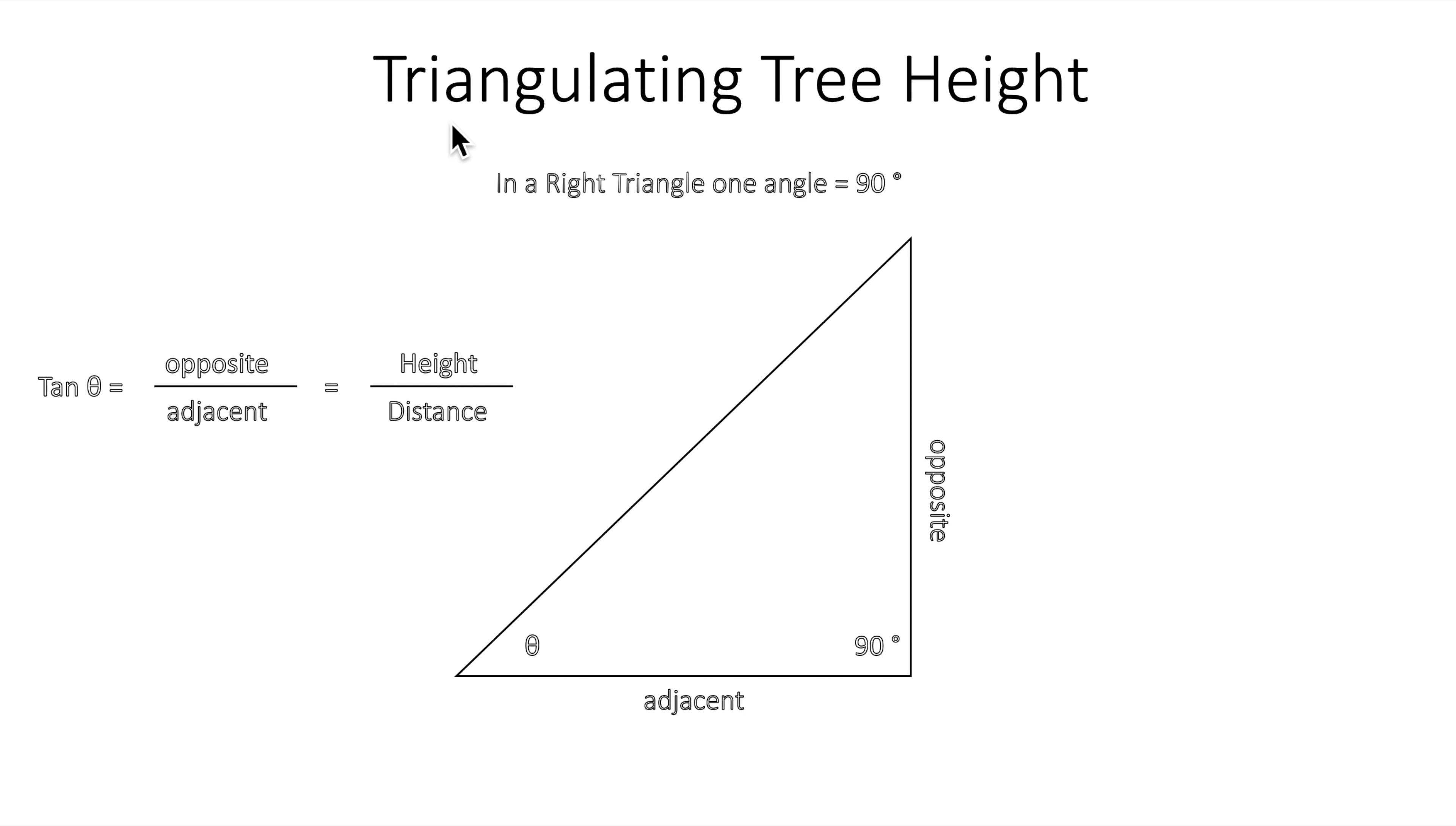First of all, for triangulation, you need to understand what a right triangle is. In a right triangle, at least one corner is a 90 degree angle.